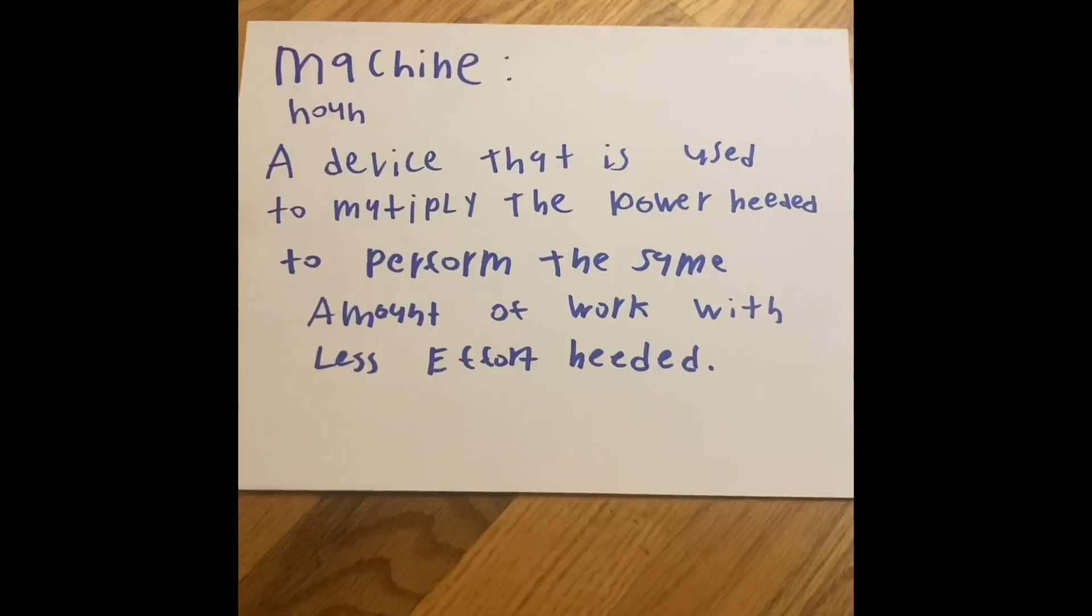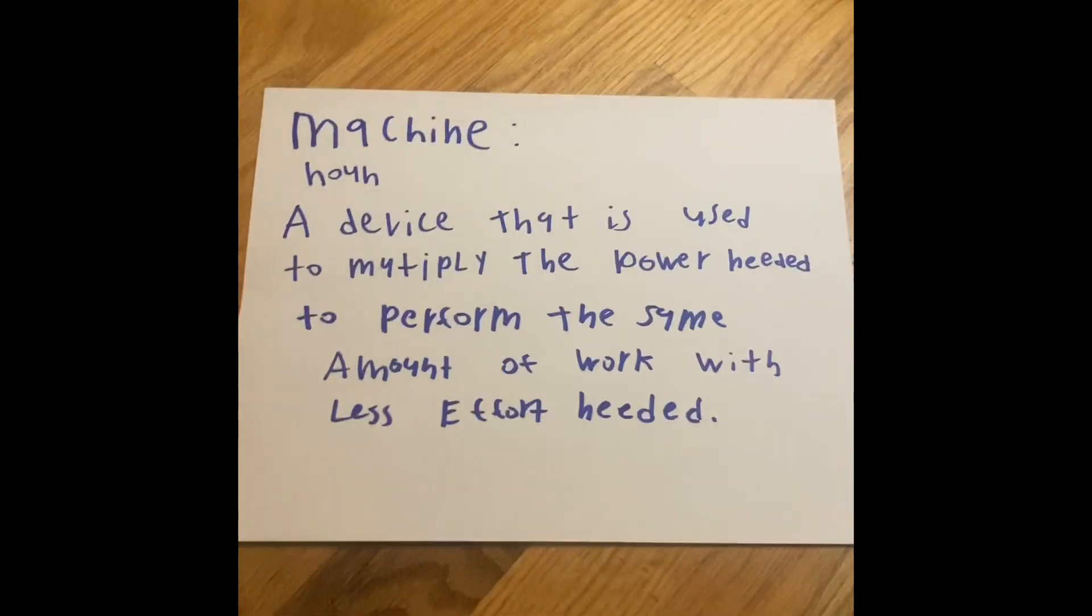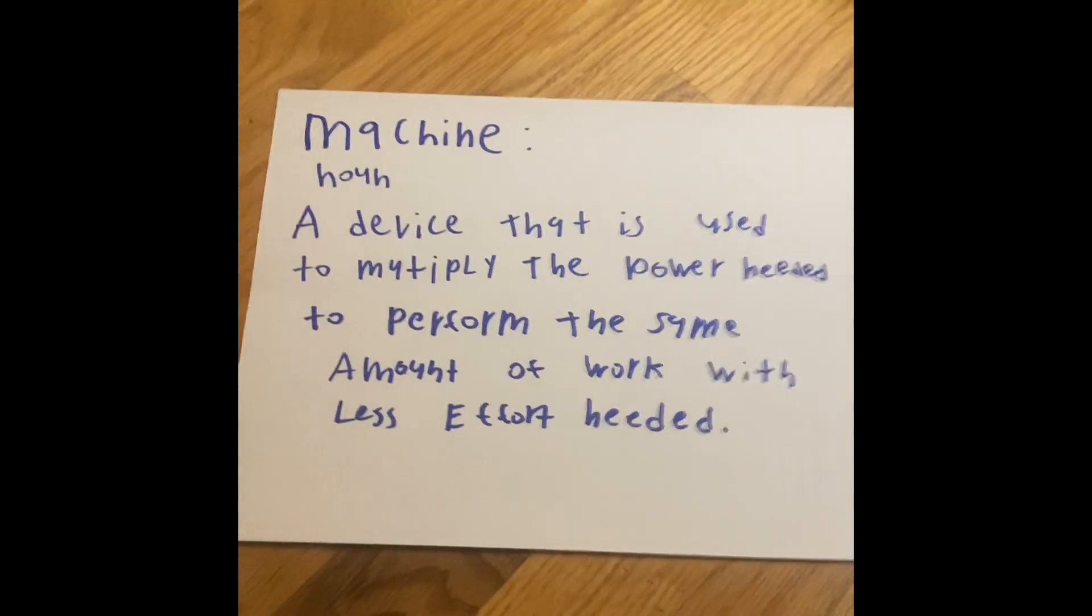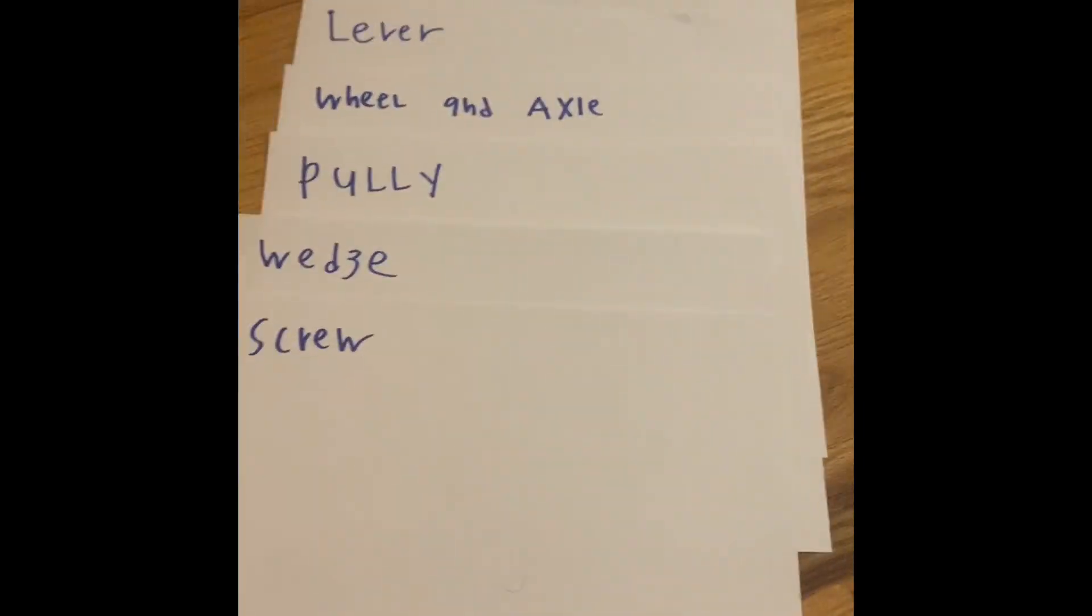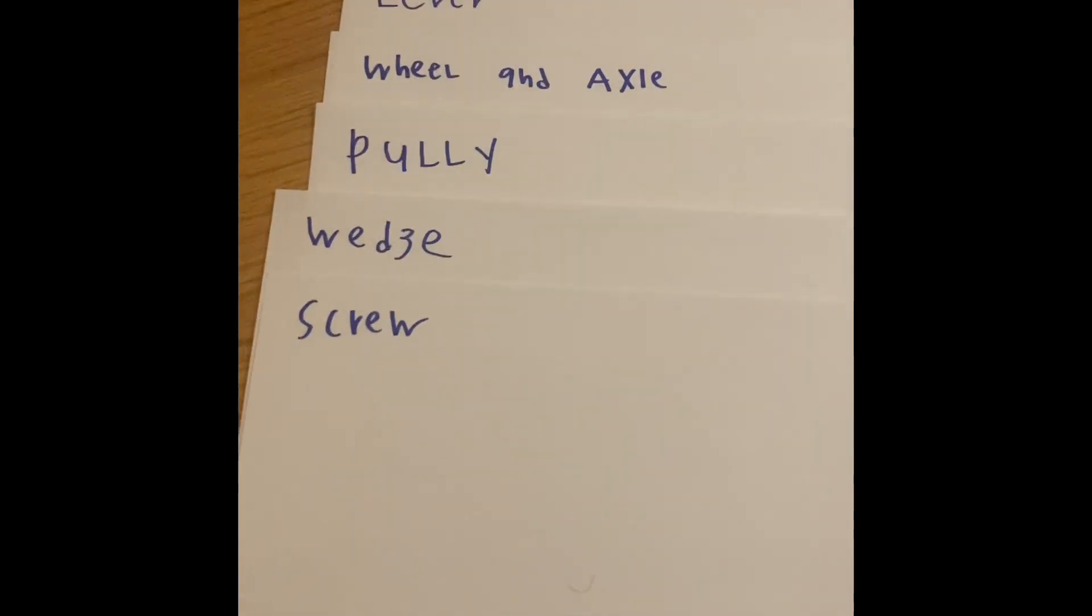And a lot of the machines that you have saw, like a car, a plane, a manufacturing machine, a robot, consists one or more of these six simple machines that we are going to explain.